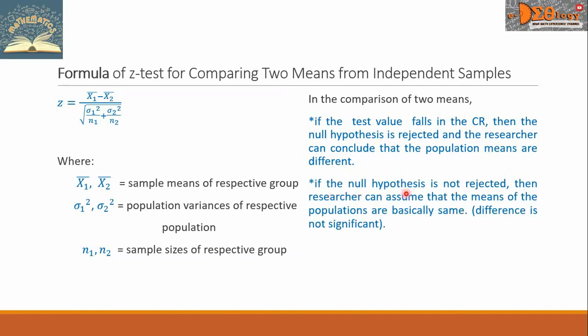If the null hypothesis is not rejected, then the researcher can assume that the means of the populations are basically the same, or the difference is not significant.